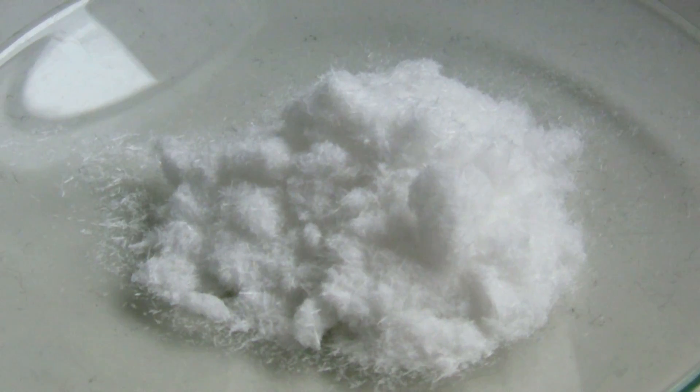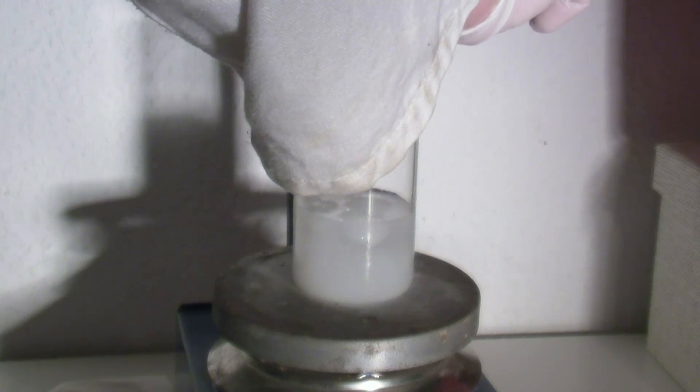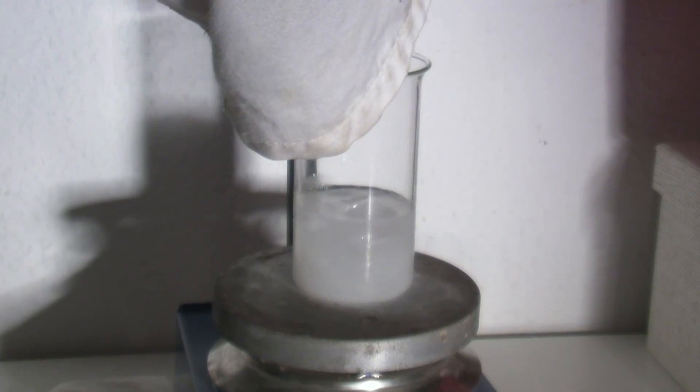I am quite sure the low yield is due to the step where the mixture is added to the ice water because a lot of it stuck to the walls of the flask. Using a smaller flask or using larger amounts should lead to yields at around 80-85%.